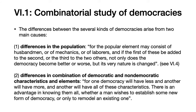The second cause of differences is the combination of democratic and non-democratic characteristics. When we're talking about a democracy, the deliberative part, which is supreme, must be democratic, but the other elements — the judiciary and the selection of offices — could take other forms, oligarchic or aristocratic. Aristotle says one democracy will have less and another will have more and another will have all of these characteristics. There is an advantage in knowing them all whether one wishes to establish some new form of democracy or only to remodel an existing one.